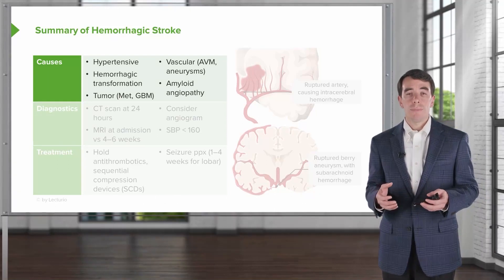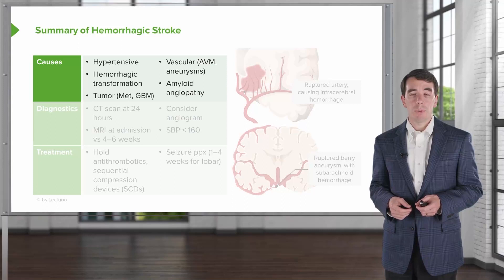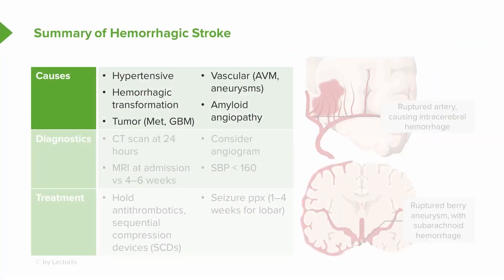What about hemorrhagic stroke? Just as there are five causes of ischemic stroke, there are five causes to think about for hemorrhagic stroke. Hypertensive hemorrhage is the most common cause. Hemorrhagic transformation of ischemic stroke is something we'll discuss in greater detail — hemorrhage can happen after an ischemic stroke. Certain brain tumors — brain metastases as well as primary gliomas — can hemorrhage. Vascular malformations, including arteriovenous malformations and aneurysms, can burst and bleed. And amyloid angiopathy is a degenerative condition where leaking of blood vessels can lead to a risk of lobar hemorrhage.